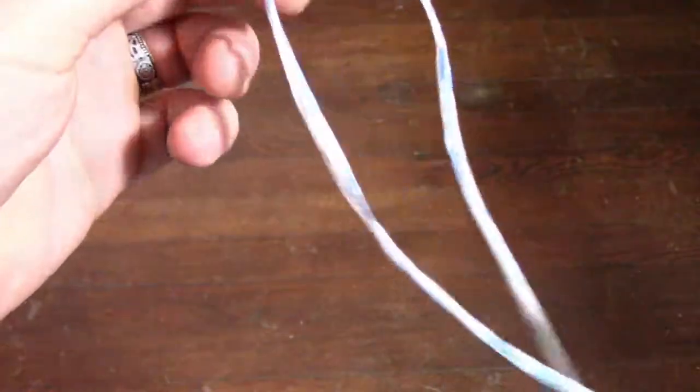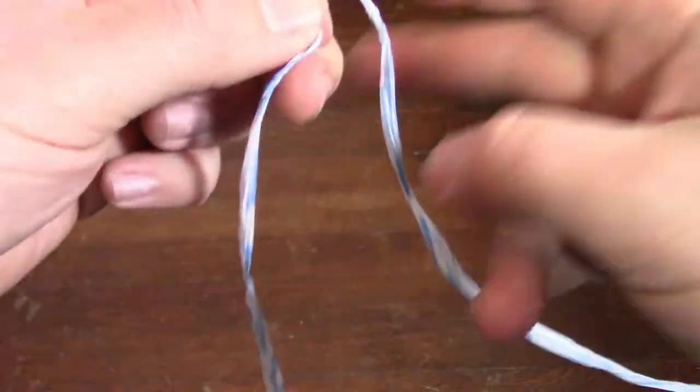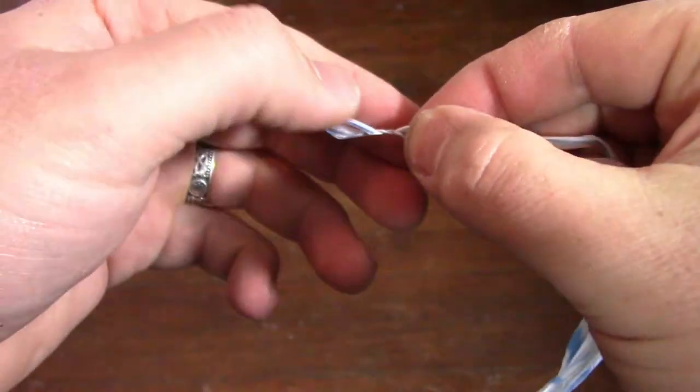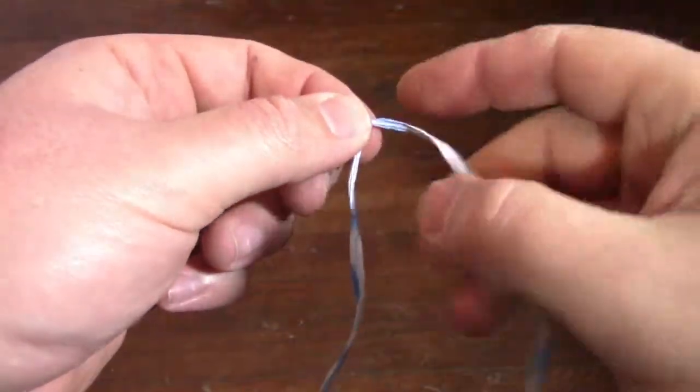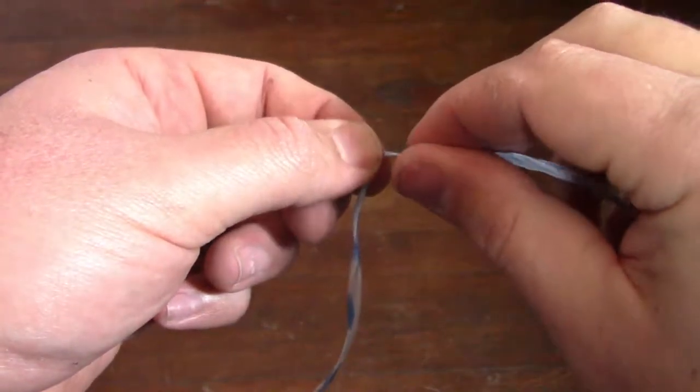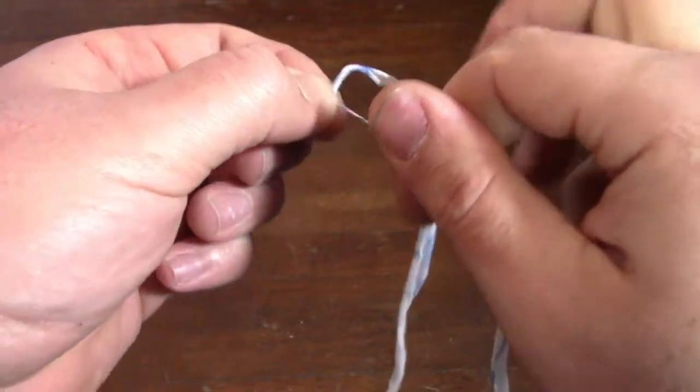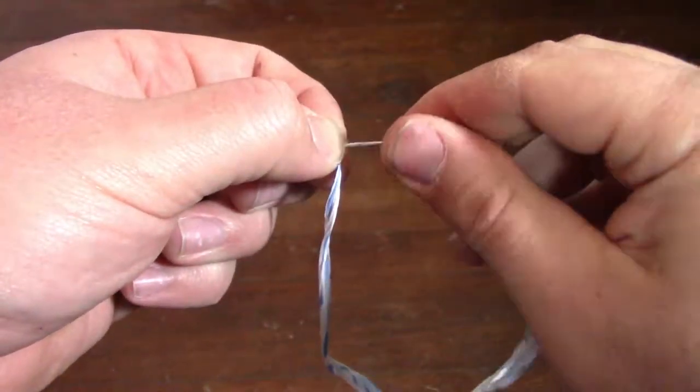So the bottom part gets twisted up to the top. You just bring it behind. See on this end, it's starting to do something. Just keep that pinch there. So my top piece, twist it away from me, pull the bottom up. Twist it away, bottom up.